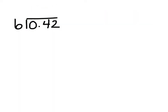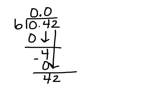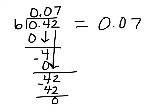Here's a final example before you try some problems on your own: how many times does 6 go into 42 hundredths? Well, 6 will go into 0 zero times. Let's bring down our 4 tenths and bring up our decimal point. 6 goes into 4 zero times, so we have a 0 with a remainder of 4 tenths. Bring down our hundredths to join it. How many times will 6 go into 42? That's right, 7. 6 times 7 is 42, leaving us with a remainder of 0. So 42 hundredths divided by 6 equals 7 hundredths.